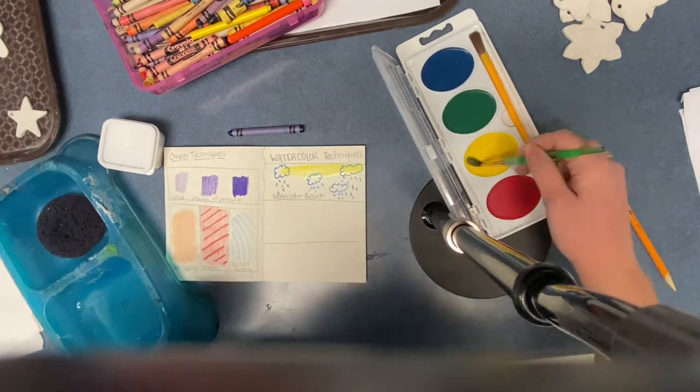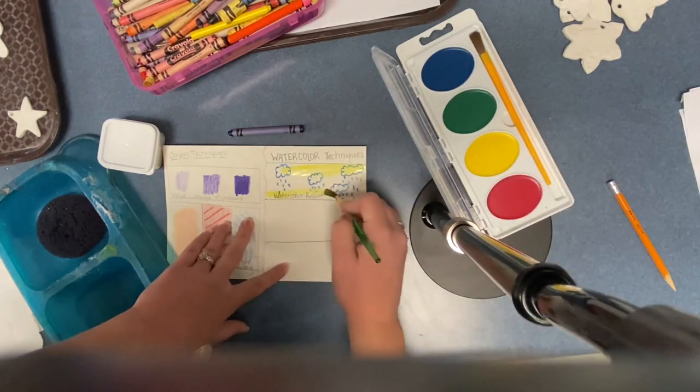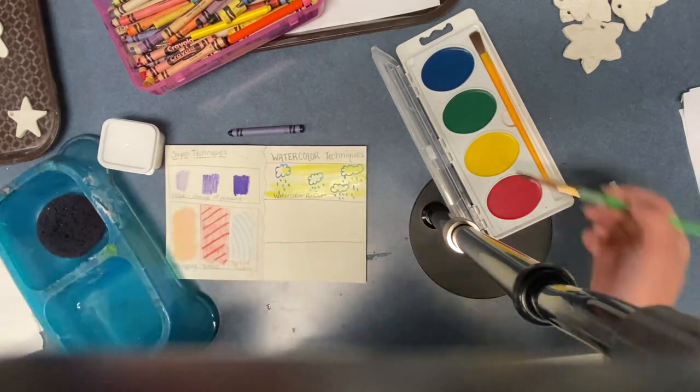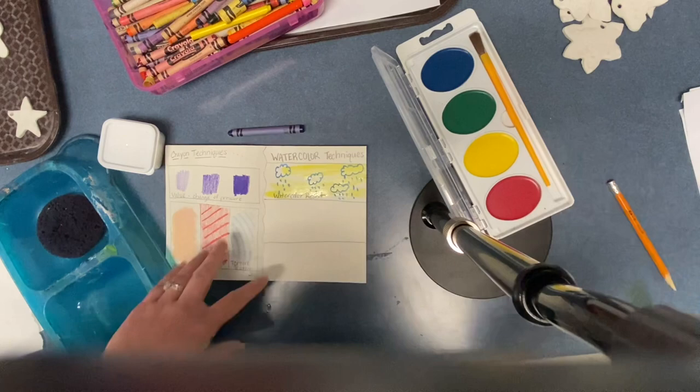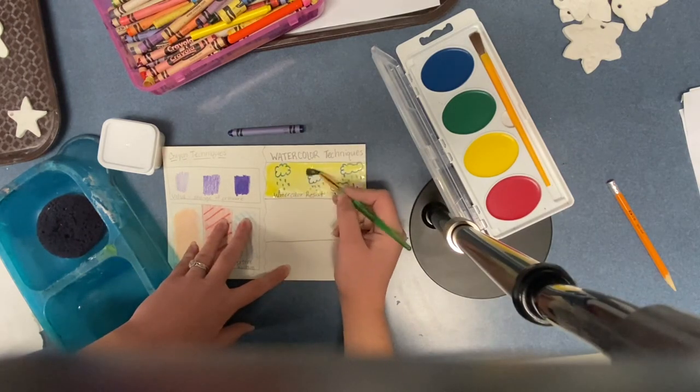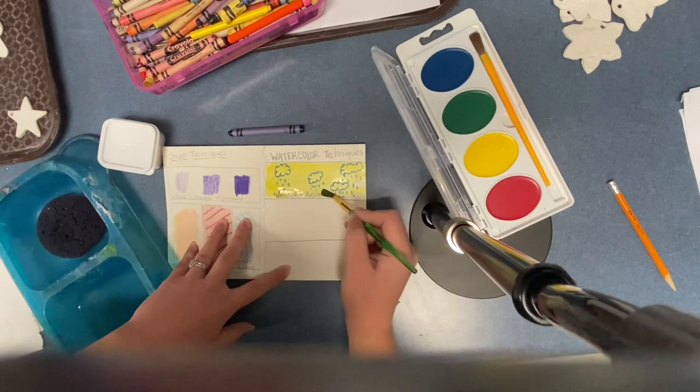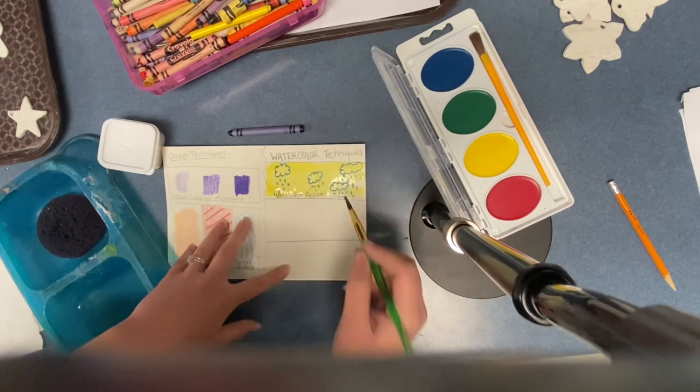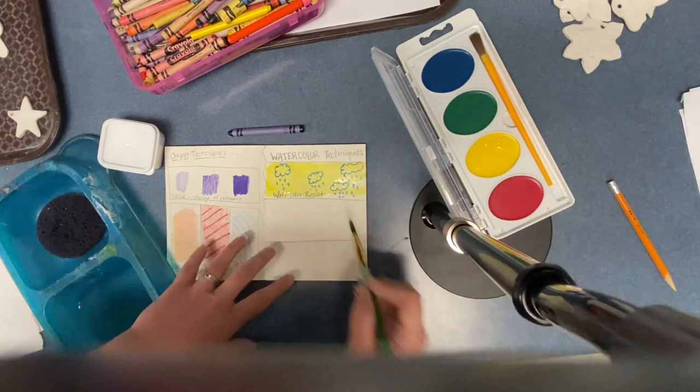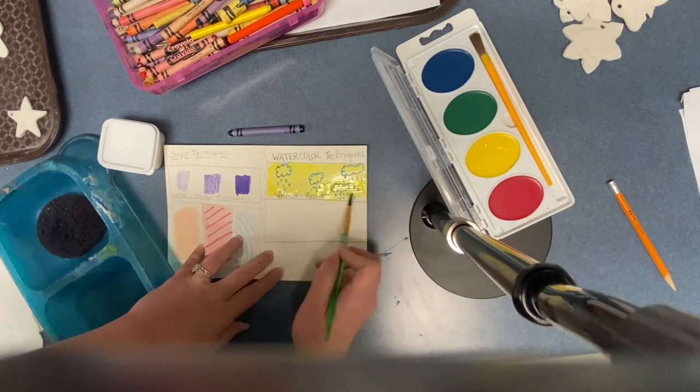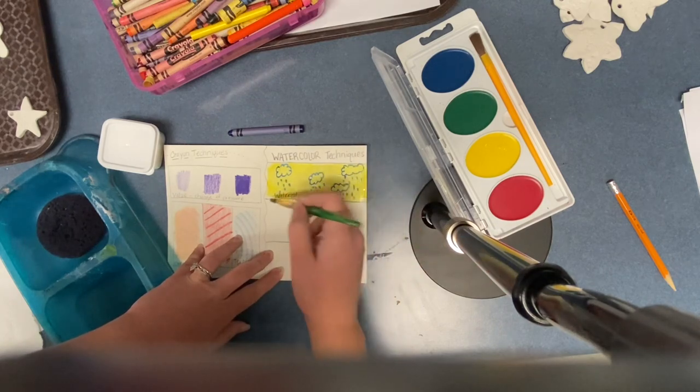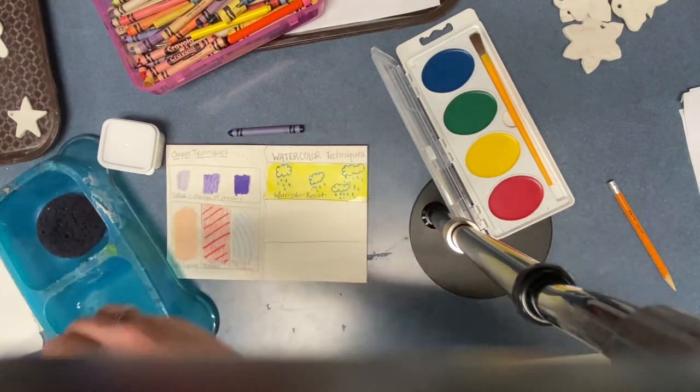If you need more color, be sure to re-dip into the water so that you can get more of that pigment or color onto your paintbrush. Notice how you can still see the waxy crayon through the watercolor. That's because the watercolor resists or pushes away from the crayon. Now we're going to wash off our paintbrush so we can start the next technique.